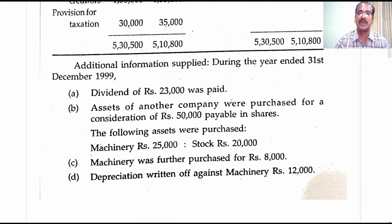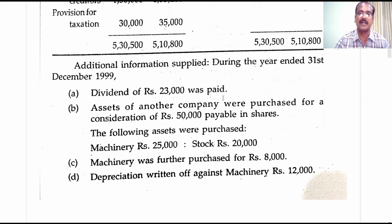Additional information supplied: during the year ended 31st December 1999, a dividend of 23,000 rupees was paid. The dividend paid has to be proposed first; therefore, it has to be debited in the adjusted profit and loss account because this is a non-operating item.